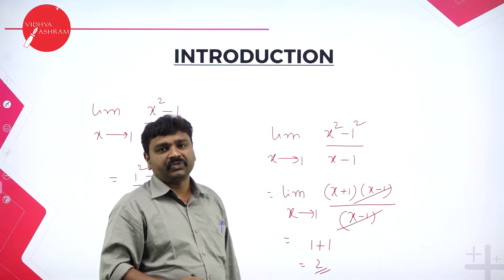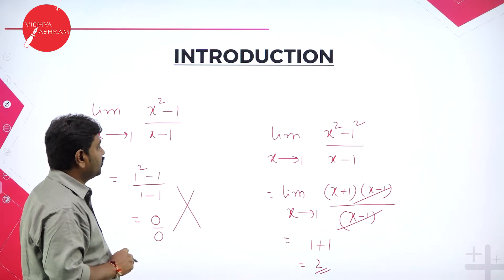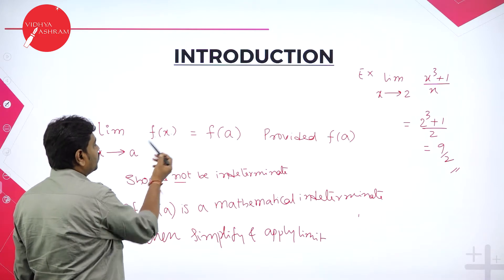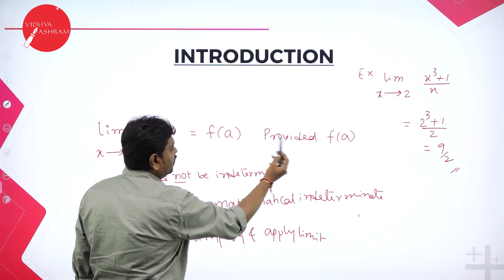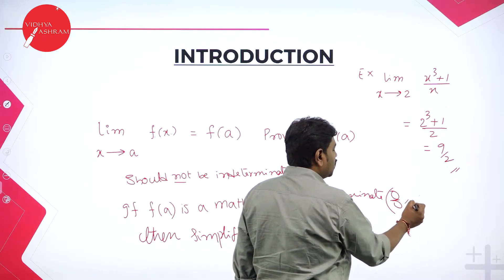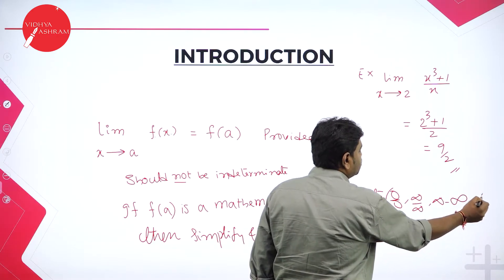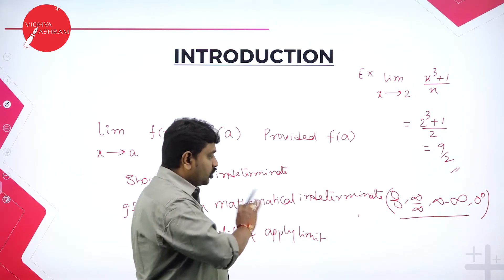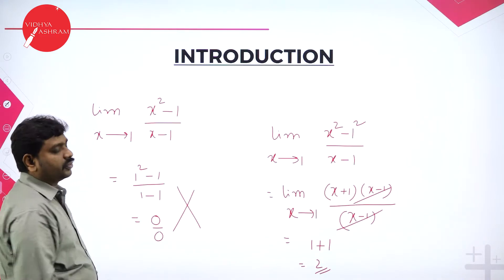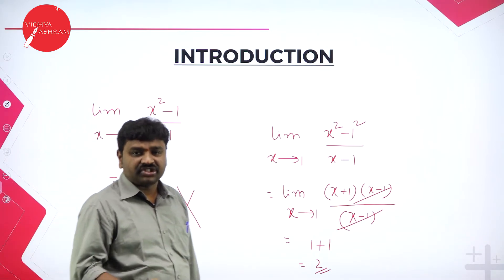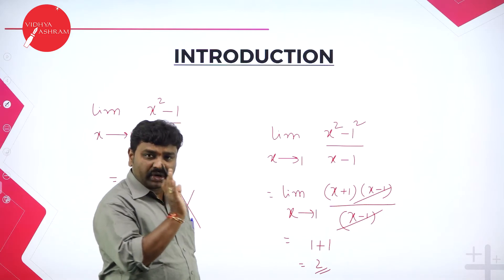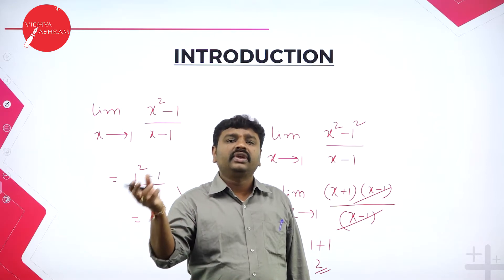So here it is factorizable, we factorize. Otherwise we have to use theorems — we call it sandwich theorem, which we need to derive. A brief introduction: limit x tends to a f of x means mathematically, in the place of x put a to get f of a, provided f of a should not be indeterminate. Indeterminate means if it is 0 by 0, or infinity by infinity, or infinity minus infinity, or 0 power 0 — if you get any one of these forms, we say indeterminate. If you are getting indeterminate, simplify and then apply limit.